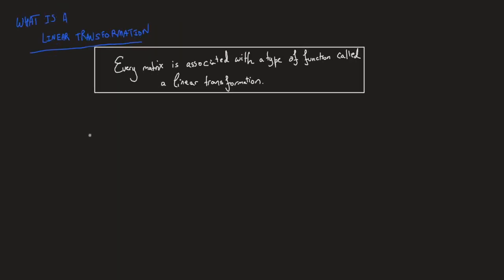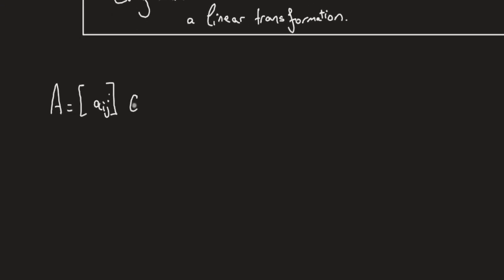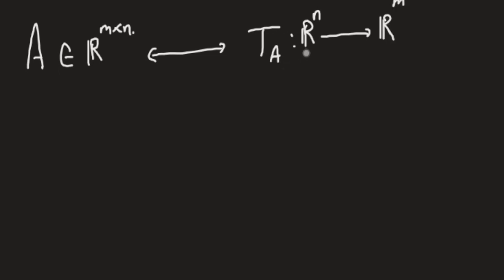So what is a linear transformation? Say I've got a matrix A — all we need to know is that A is of size n by n. We can link or associate this matrix A with a function, call it T sub A, that maps R^n to R^n. That is, it takes an n-dimensional column vector in R^n and outputs an n-dimensional vector. So T_A would be a function of vector x of size n, and outputs A times x.